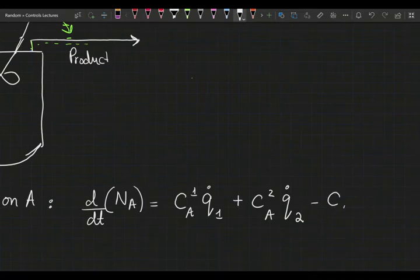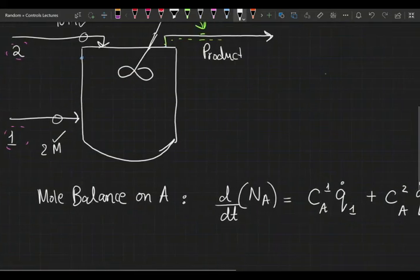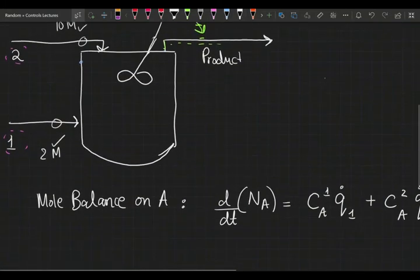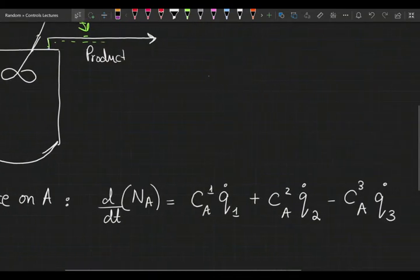And C_A3 q_3 is going to be the output stream. Obviously, as you can see, I do not have a reaction. This is not a reacting system, so therefore I do not need a source or sink term.